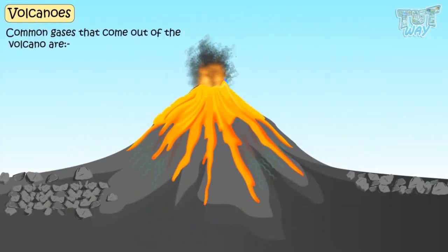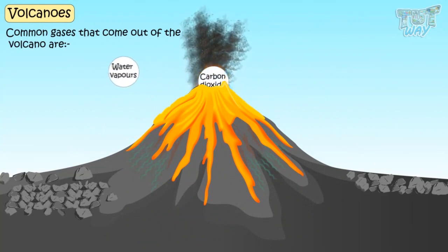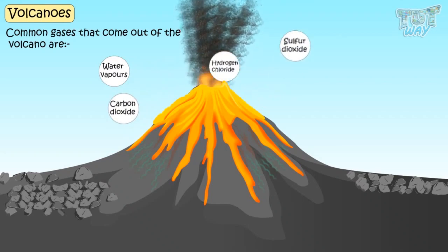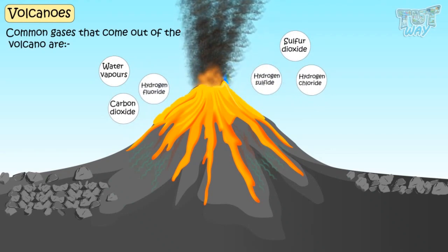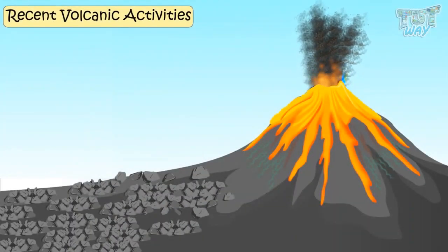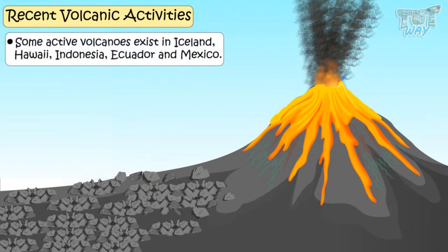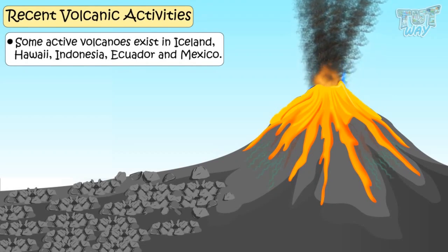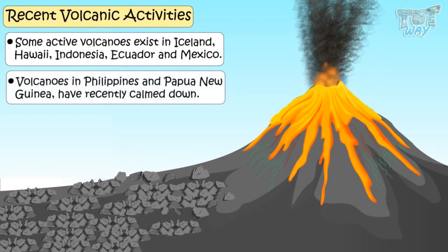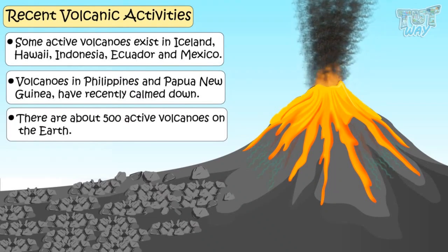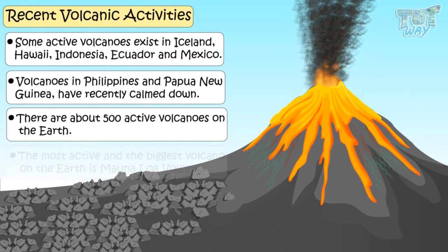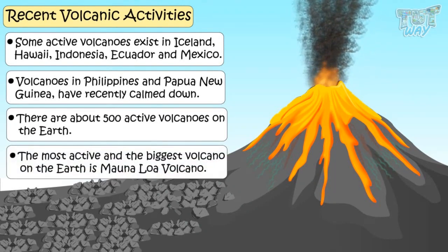Common gases that come out of volcanoes are water vapor, carbon dioxide, sulfur dioxide, hydrogen chloride, hydrogen fluoride, and hydrogen sulfide. Some active volcanoes exist in Iceland, Hawaii, Indonesia, Ecuador, and Mexico. Volcanoes in the Philippines and Papua New Guinea have recently calmed down. There are about 500 active volcanoes on the earth, and the most active and biggest volcano is Mauna Loa.